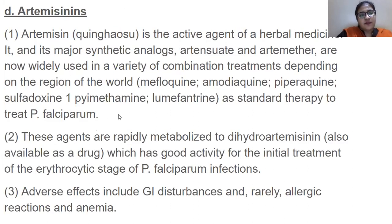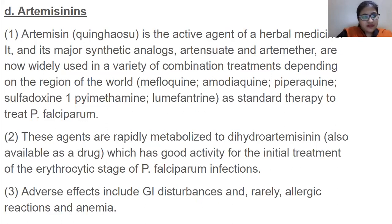Artemisinin is the active agent of a herbal medicine. Its major synthetic analogs artesunate and artemether are now widely used in a variety of combination treatments depending on the region of the world. These are standard therapy to treat P. falciparum. These agents are rapidly metabolized to dihydroartemisinin, which has good activity for the initial treatment of the erythrocytic stage of P. falciparum infections. Adverse effects include GI disturbances and rarely allergic reactions and anemia.